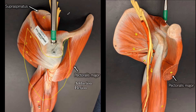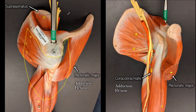When we turn the model over to the underside, there's the coracobrachialis, which also adducts and flexes at the shoulder.